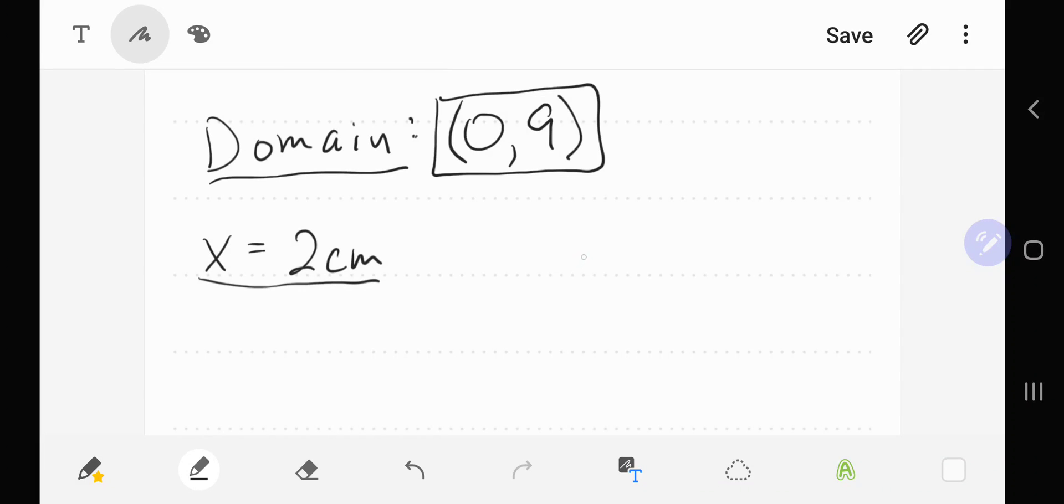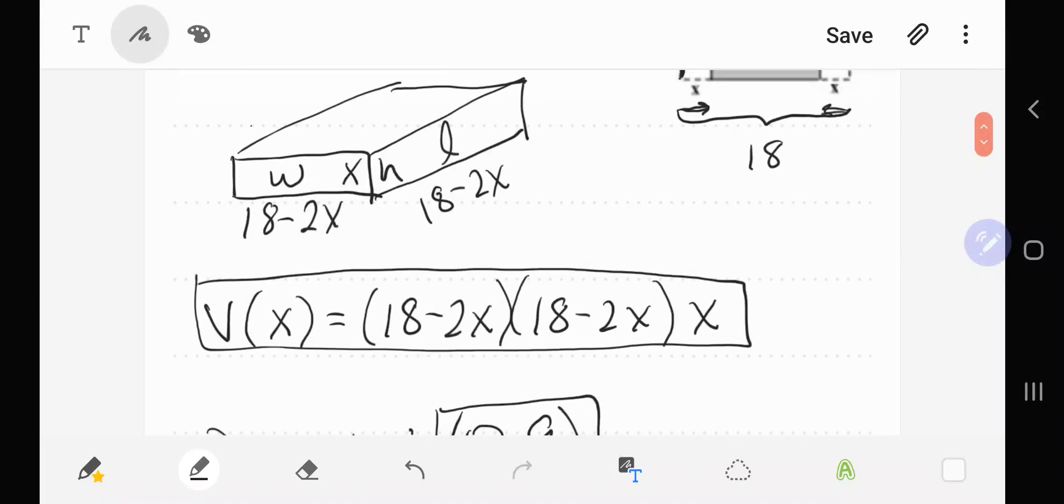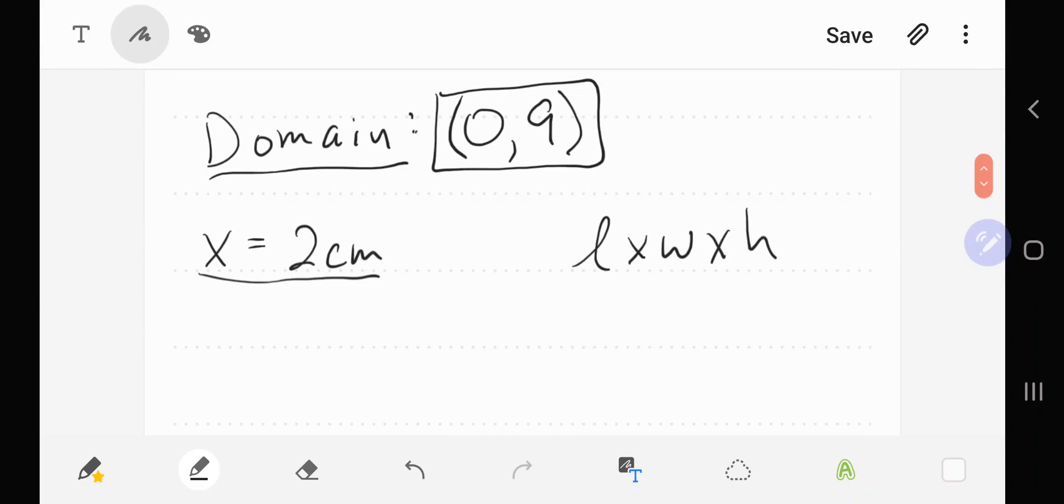The dimensions of the box are length by width by height. If we scroll up, we see the height is just x. So that's one of our dimensions.